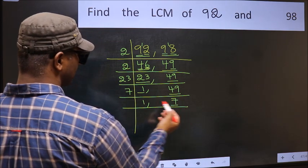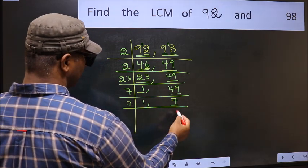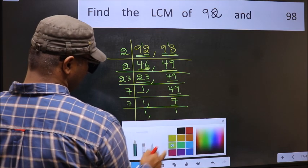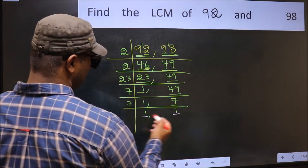Now we have 7. 7 is a prime number, so 7 times 1 equals 7. So we got 1 in both places.